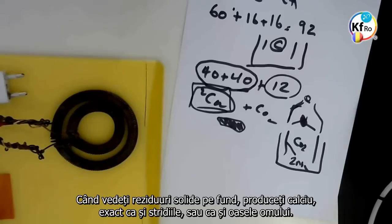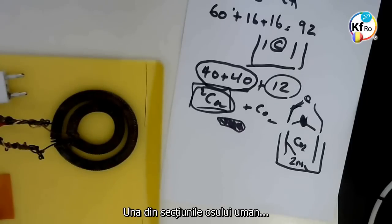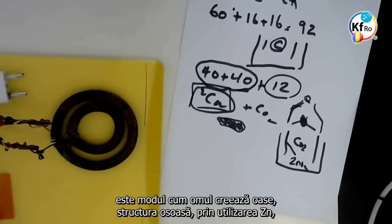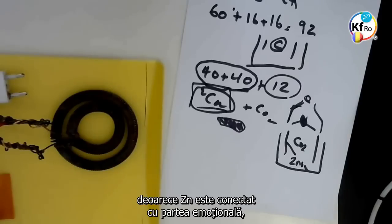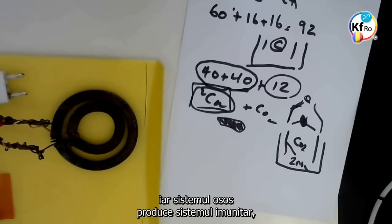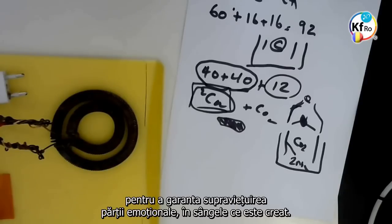Wherever you see these residual solid bits at the bottom, you produce Calcium exactly like an oyster or like the bone of the Man. One of the sections of the bone of the Man, it's the way Man creates bone structure, is the use of Zinc, because Zinc is connected to the Emotional part, and the bone structure producing an immune system is to guarantee the survival of the Emotional part in the blood which is created.